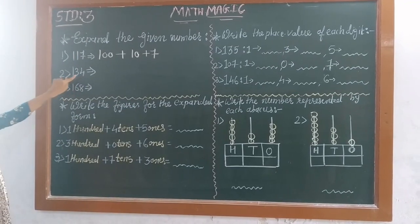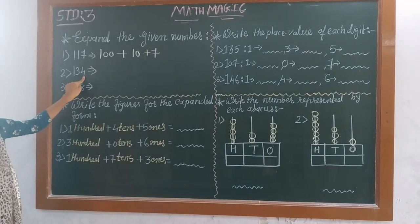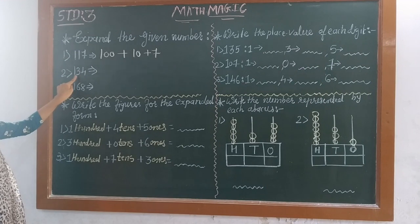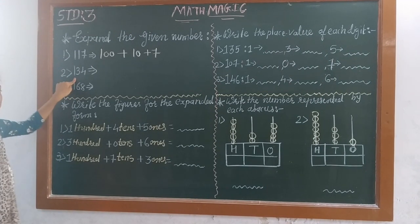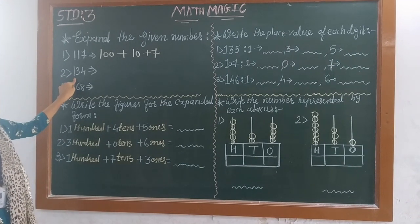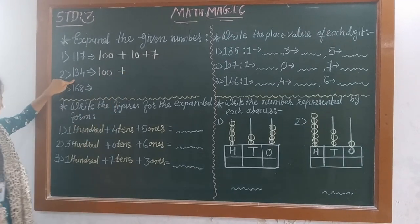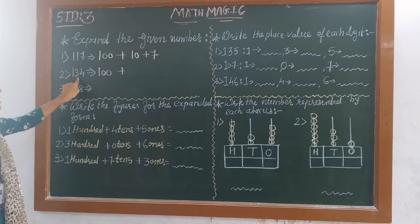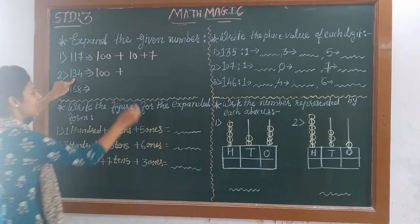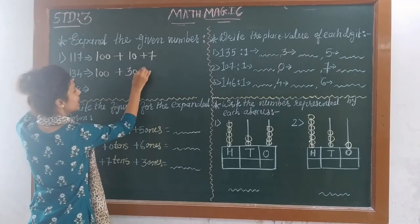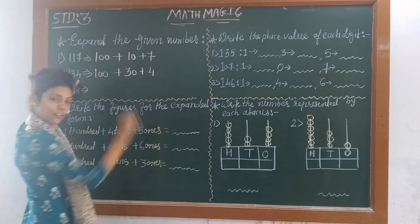Next one: 134. We will start from the right side. 1 is at 100's place, so it will be multiplied by 100 — 1 hundred is 100 — and we write plus. Then 3 is at 10's place, so 3 multiplied by 10 is 30, and plus 4 is at 1's place, so 4 ones are 4.